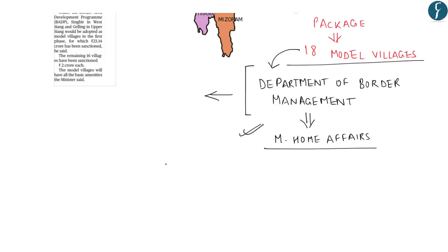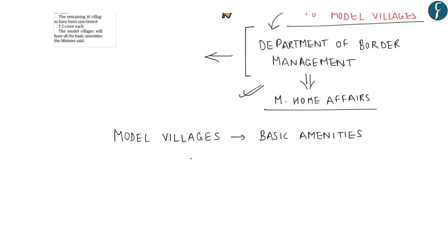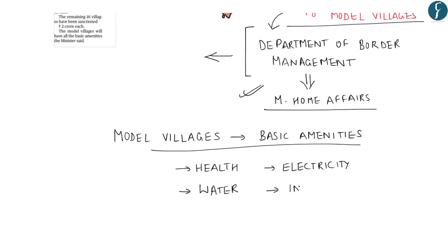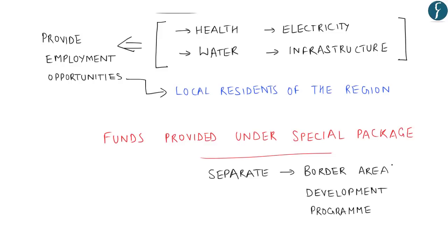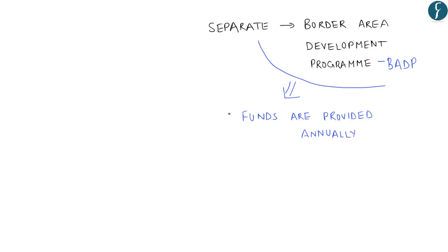These 18 model villages will have all basic amenities, with development focused on sectors like health, water, electricity, and infrastructure. It will also help in providing employment opportunities to local residents. According to the Home Ministry, funds provided under the special package program will be separate from the regular Border Area Development Program, under which funds are provided annually to border areas.